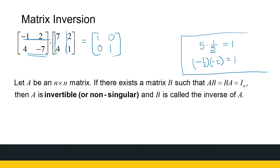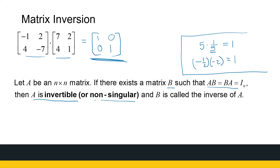Similarly for matrices, we can find matrices that I multiply together and get the identity. That gets us to the idea of invertibility. We say matrix A is invertible — we sometimes use the word non-singular. But A must be an n by n matrix, so it has to be a square matrix. If there exists another matrix B such that A times B equals B times A equals the identity matrix, then A is invertible.